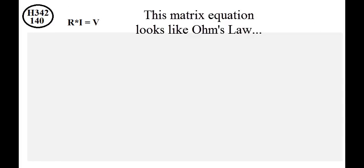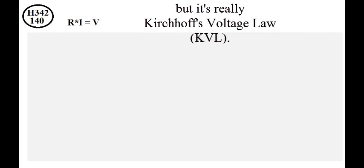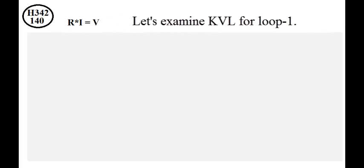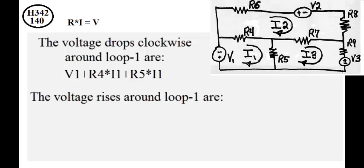This matrix equation looks like Ohm's law, but it's really Kirchhoff's voltage law. Let's examine Kirchhoff's voltage law for loop 1. The voltage dropped clockwise around loop 1 are V1 and R4 times I1 and R5 times I1. The voltage rises around loop 1 are R4 times I2 and R5 times I3.